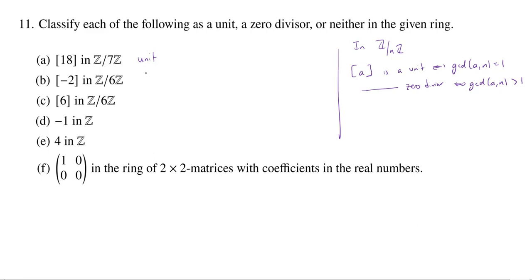OK. What about this next one, negative 2 and 6? Well, those are definitely not relatively prime. 2 is a divisor of both negative 2 and 6. And so this is going to be a zero divisor.